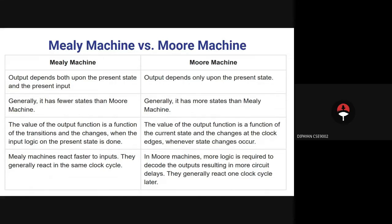In a Mealy machine, output depends both upon the present state and the present input. In a Moore machine, the output depends only upon the present state. Generally, the Mealy machine has fewer states than the Moore machine, while the Moore machine generally has more states than the Mealy machine. In the Mealy machine, the output function changes when the input logic on the present state changes. In the Moore machine, changes occur at clock edges whenever a state change occurs. The Mealy machine reacts faster to inputs and generally reacts in the same clock cycle. In the Moore machine, more logic is required to decode the output, resulting in more circuit delays, and it generally reacts one clock cycle later.